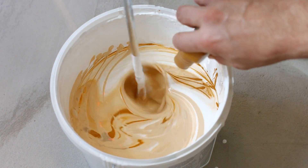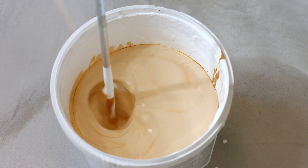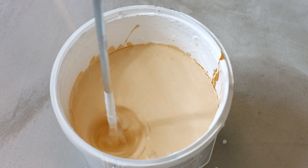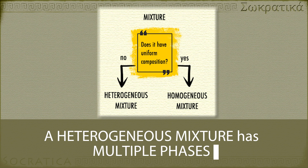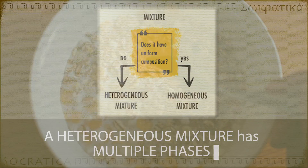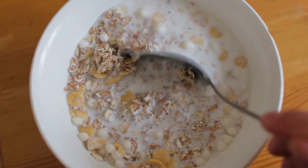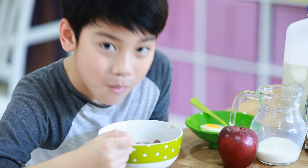Think of when you mix paint: if you mix it well enough, you get the same color all the way through. That's a homogeneous mixture. A heterogeneous mixture, on the other hand, does not have a uniform composition all the way through. You can identify different phases in the mixture. Think of a bowl of cereal with milk—each time you stick in your spoon, you'll pull out a different, unpredictable ratio of components.